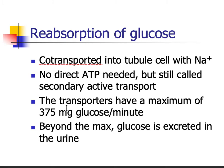A healthy normal individual's blood glucose levels would never be so high that they would exceed the ability to reabsorb. If anyone does go above that maximum, glucose is excreted in the urine, and that's an indication something is wrong — usually diabetes.